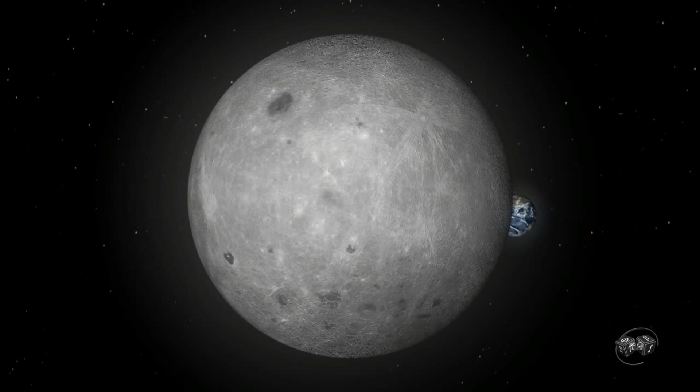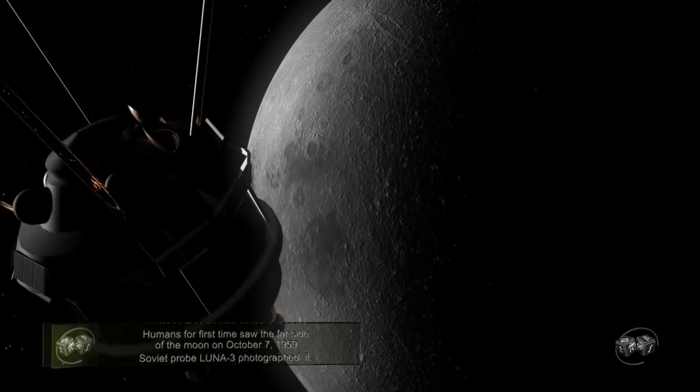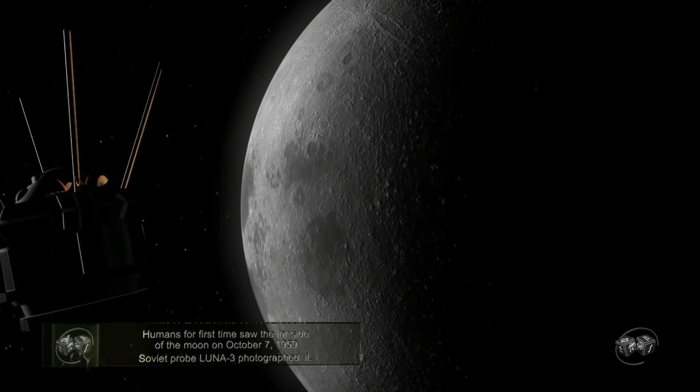The far side of the Moon was first perceived by humans through the Soviet probe Luna 3. The Soviet spacecraft photographed the far side of the Moon on October 7, 1959.